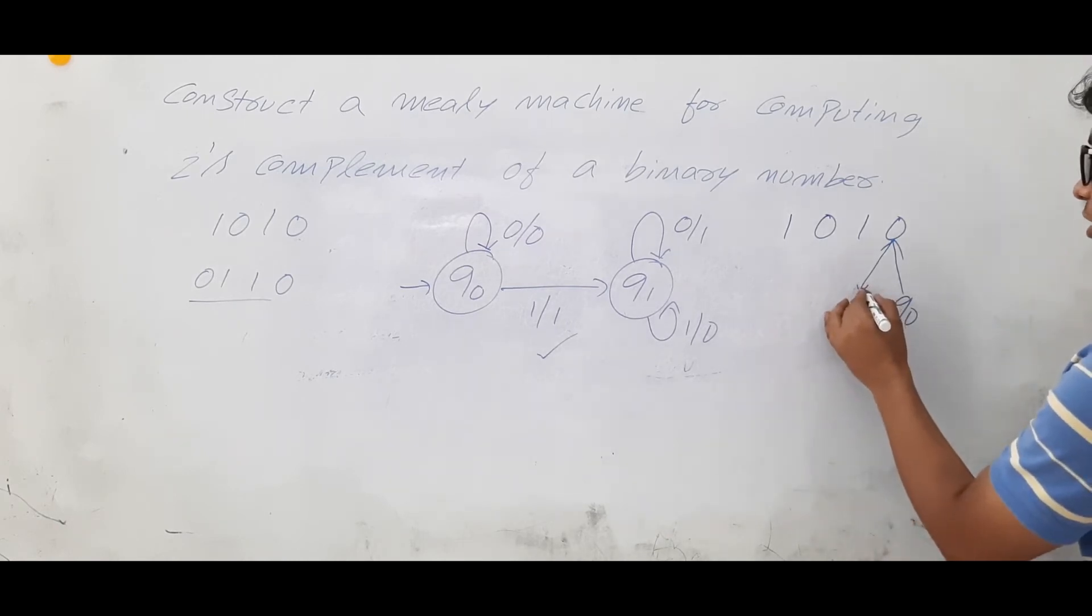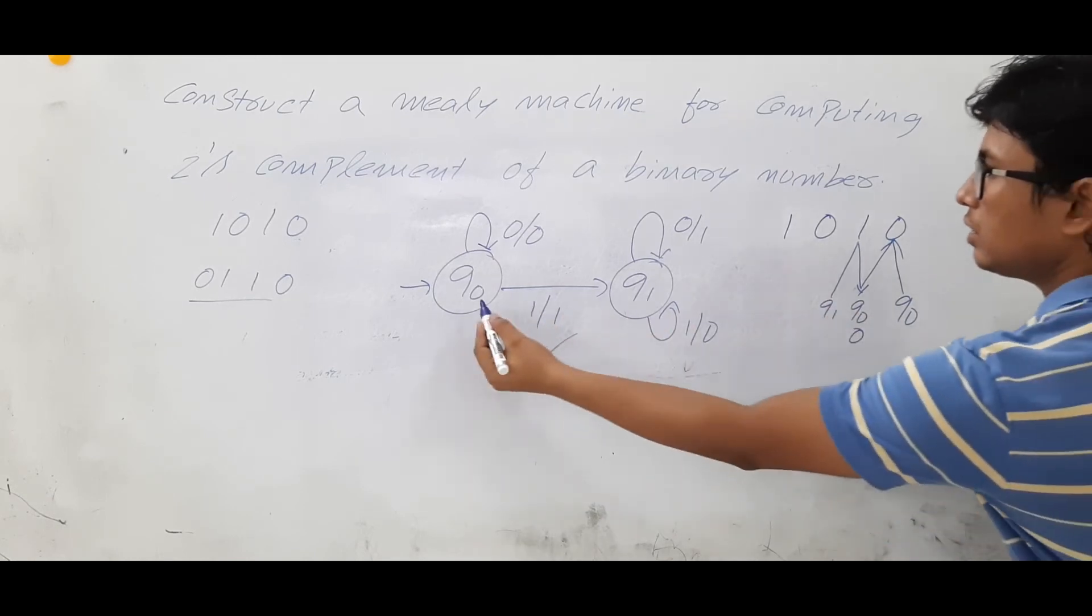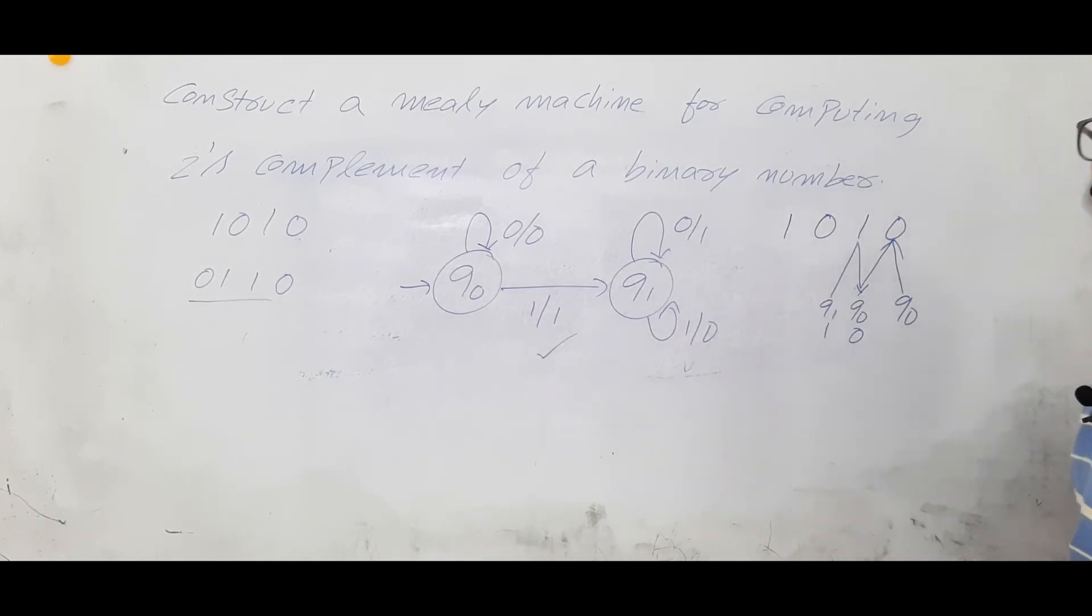Now q0 on 1, you are going to a state called q1. q0 on 1, what is the output you are generating? 1.